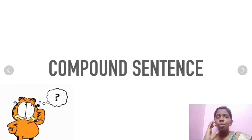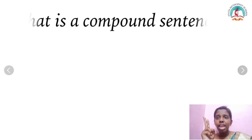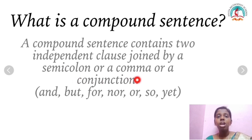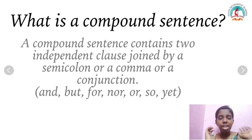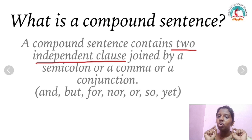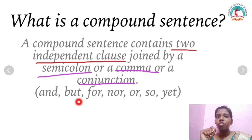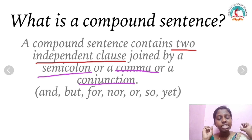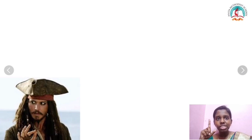A compound sentence contains two independent clauses joined by a semicolon, a comma, or a conjunction. It is easy to identify because it has two independent clauses that can stand alone. They will be joined by a comma, a semicolon, or a conjunction — such as 'and,' 'but,' 'for,' 'nor,' 'or,' 'so,' or 'yet.'